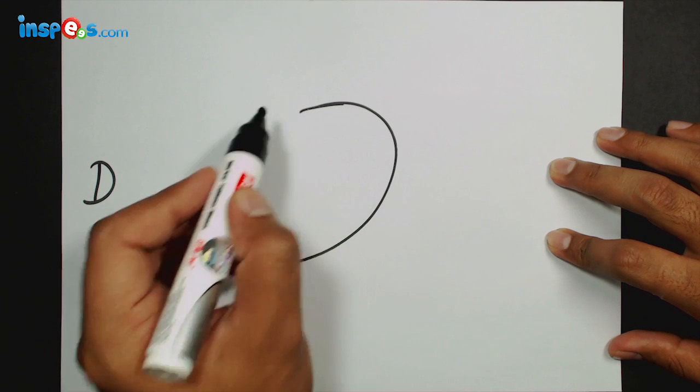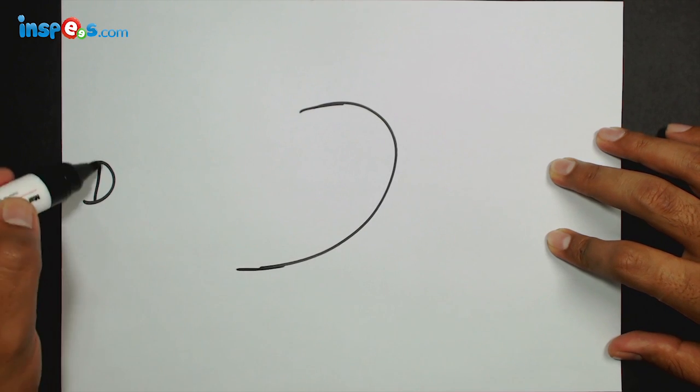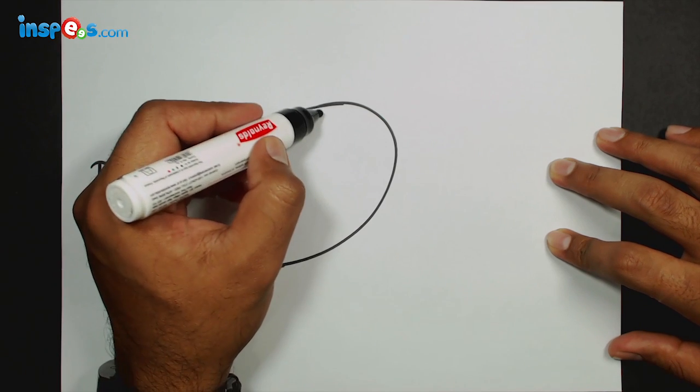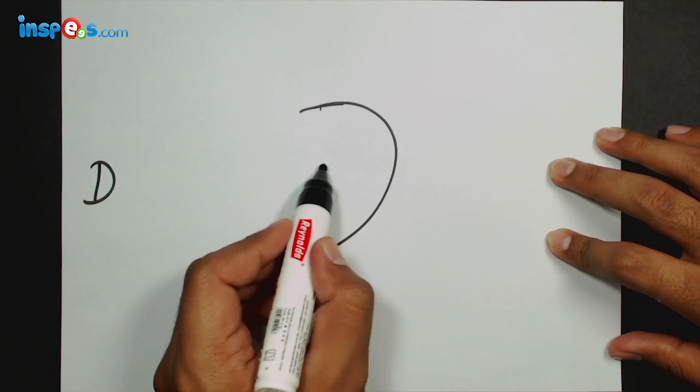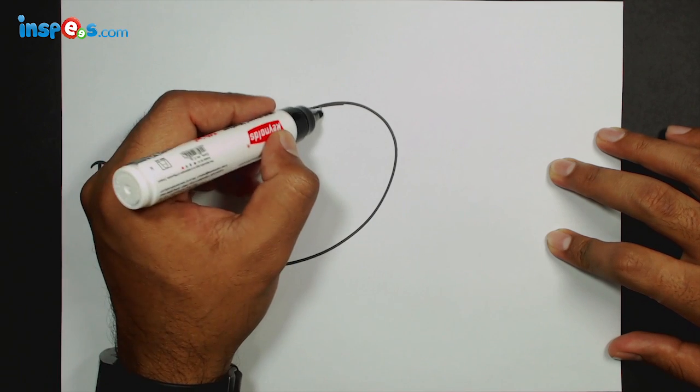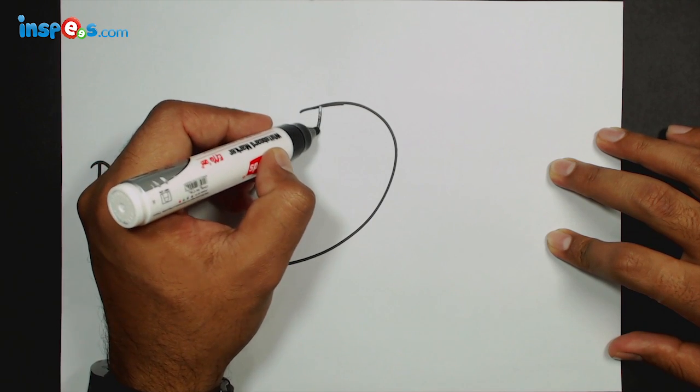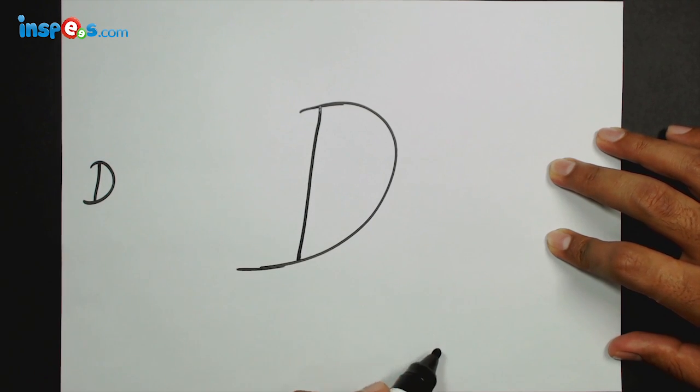Let's extend it a bit here also. Now next we'll draw this vertical line. So starting from here, make sure that there should be sufficient space over here. Starting from here I'm going to draw a straight line like this.